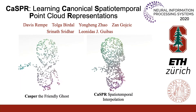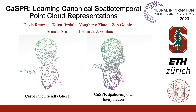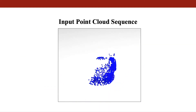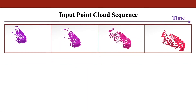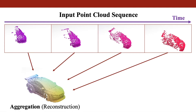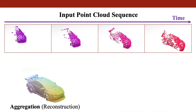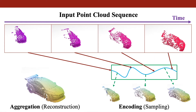We present CASPER: Learning Canonical Spatiotemporal Point Cloud Representations. In this work, we aim to learn spatiotemporal representations of object shape from 4D point clouds. Given a partial and irregularly sampled point cloud sequence, we want to aggregate information over time to reconstruct object shape, as well as encode the input to enable sampling the sequence at any desired spatiotemporal resolution.